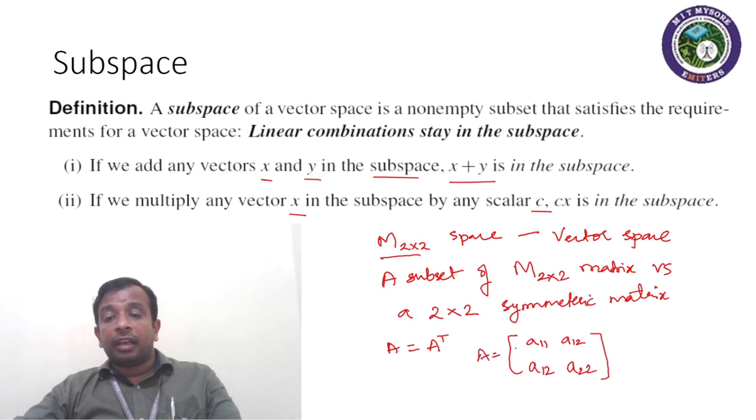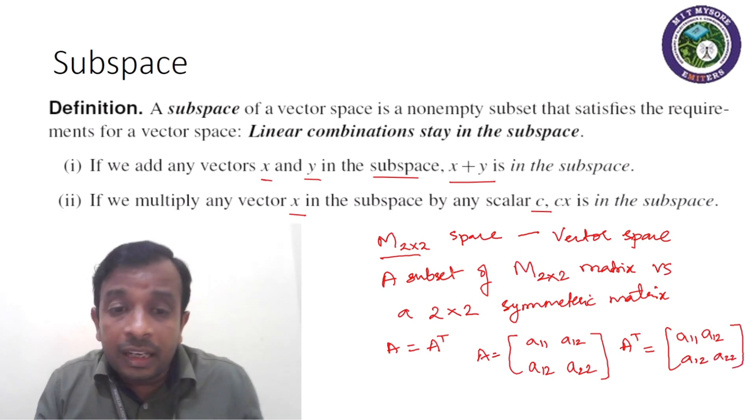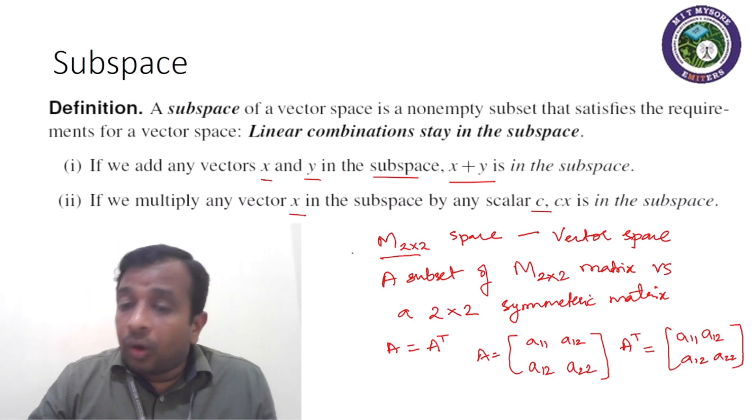And when I write A transpose, it would be again the same matrix: A11, A12, A12, and A22. That is, by interchanging rows and columns, it doesn't make any difference. Then we call it as a symmetric matrix. Hope the viewers are with me on this—A is equal to A transpose.